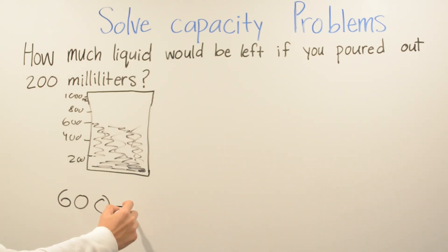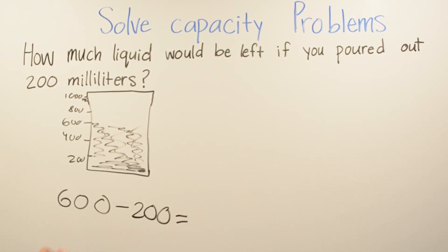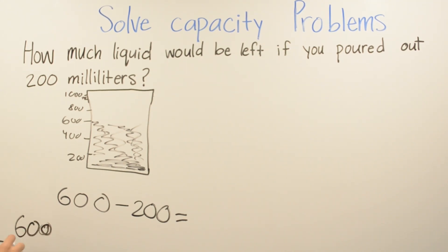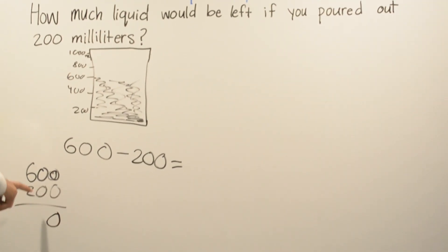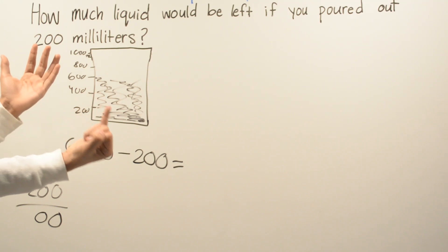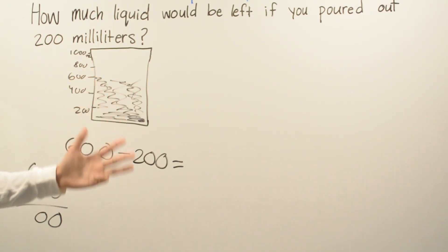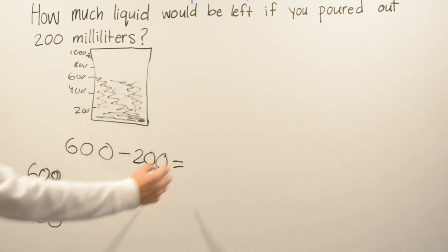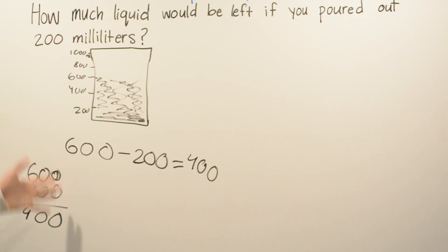So 600 minus 200. We're going to do our math right here. 0 minus 0 is 0, 0 minus 0 is 0, and 6 minus 2 is 4. So your final answer will be 400 milliliters.